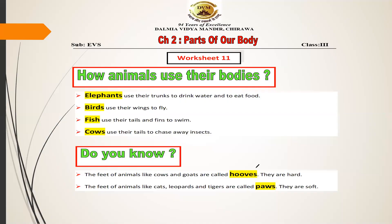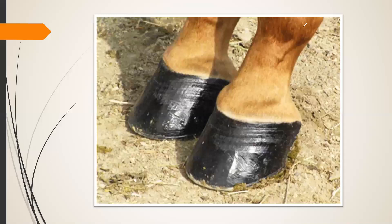The next topic we are going to learn today is hooves. Animals like cow, goat, camel, and deer have feet that are quite different, and we call these feet hooves. You can clearly see from the picture what hooves look like — the feet of a cow, camel, or goat look like this. These hooves are very hard.